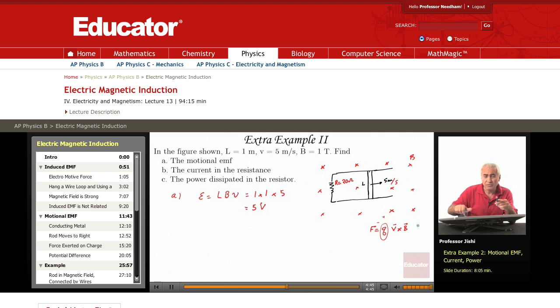So the force on positive charges is up. If Q is negative, the force will be down. So what happens then is that we end up with positive charge here and negative charge here.